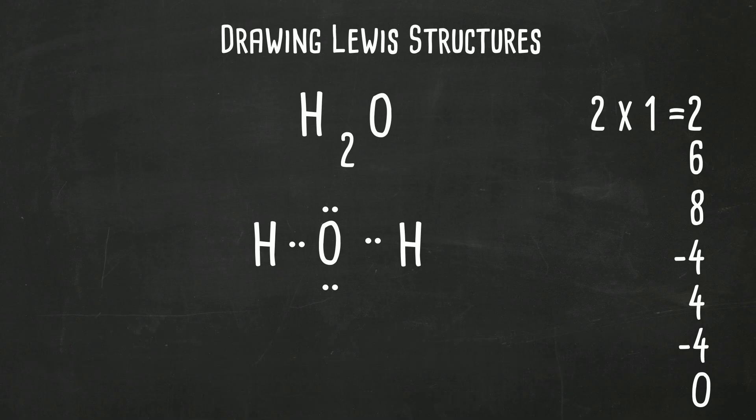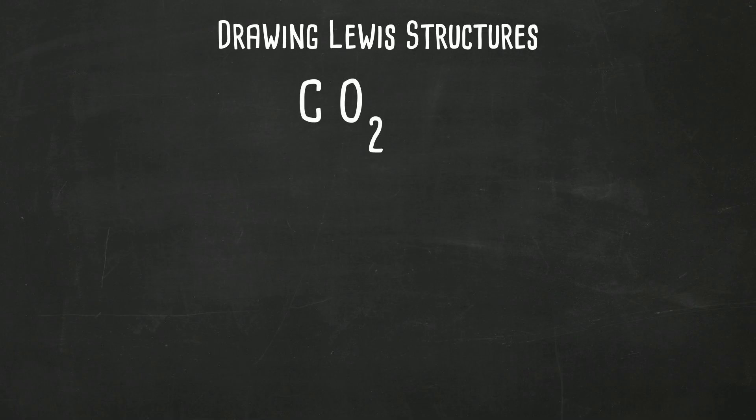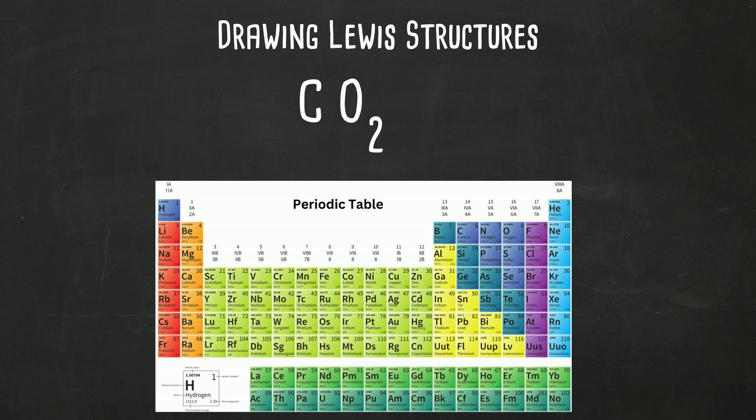So there is the Lewis structure for H2O. Let's next look at CO2. Step one, let's count the number of valence electrons. Carbon is in group 14, so that gives us four electrons.